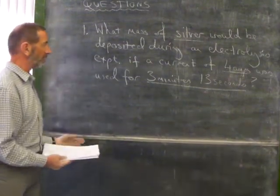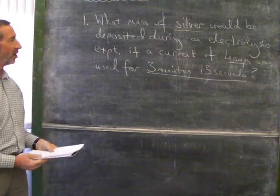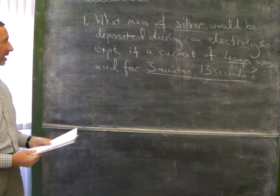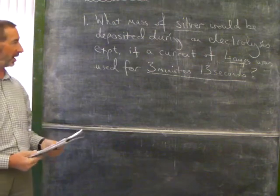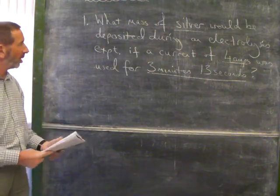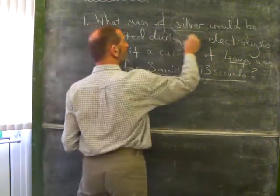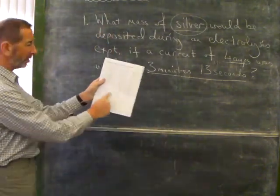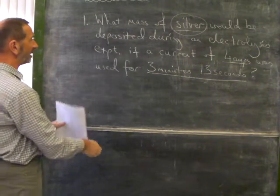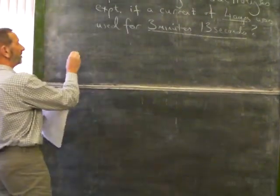Here's the typical question. What mass of silver would be deposited during an electrolysis experiment if a current of 4 amps was used for 3 minutes 13 seconds? Well, where do we begin? Because the question refers to silver, we can use the equation for silver on page 11 of the data book to find the relevant chemistry.